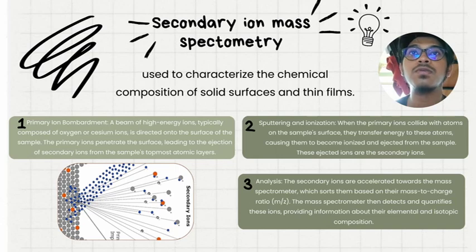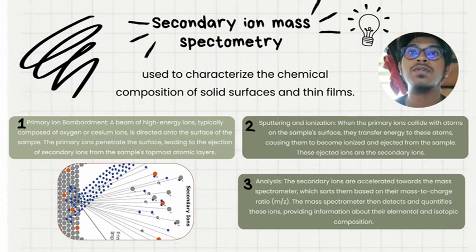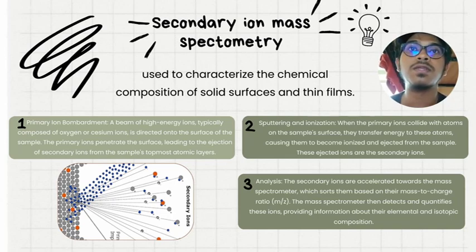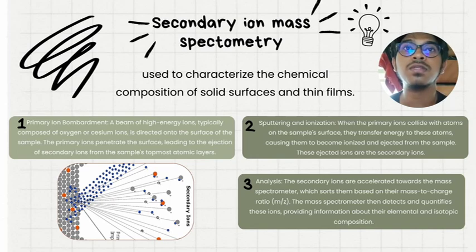The fourth theoretical procedure is Secondary Ion Mass Spectrometry, used to characterize the chemical composition of solid surfaces and thin films. The first procedure is primary ion bombardment — a beam of high-energy ions, typically composed of oxygen or cesium ions, is directed onto the surface of a sample. The primary ions penetrate the surface, leading to the ejection of secondary ions from the sample's topmost atomic layers. Second is sputtering and ionization — when the primary ions collide with atoms of the sample surface, they transfer energy to these atoms, causing them to become ionized and ejected from the sample as secondary ions.